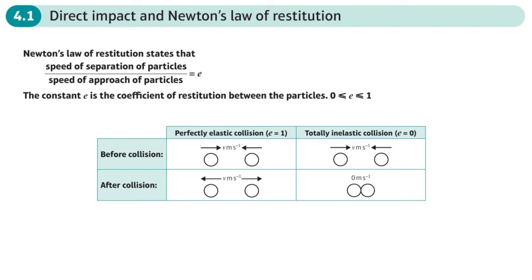This is the first section in the chapter on elastic collisions in one dimension, chapter four. This is about direct impact and Newton's Law of Restitution. By direct impact, we mean two particles — models of particles — that directly impact each other.